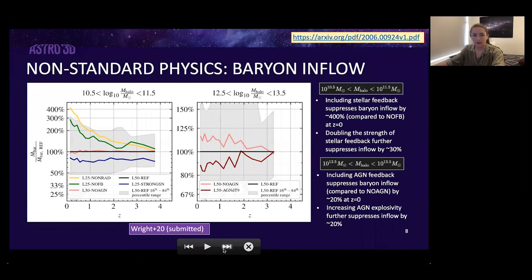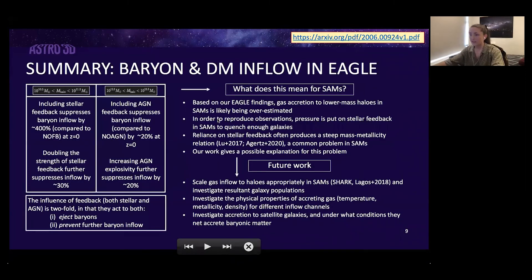To summarize really quickly, stellar feedback in EAGLE appears to be incredibly important to explain the baryon depletion of lower mass halos, and AGN feedback appears to be able to modulate inflow rates in higher mass halos by around 20 percent. The more fundamental result here is that feedback from stars and AGN act to both eject gas but then they also act to further prevent inflow. Most SAMs really only adopt a model including that ejective mode of feedback.